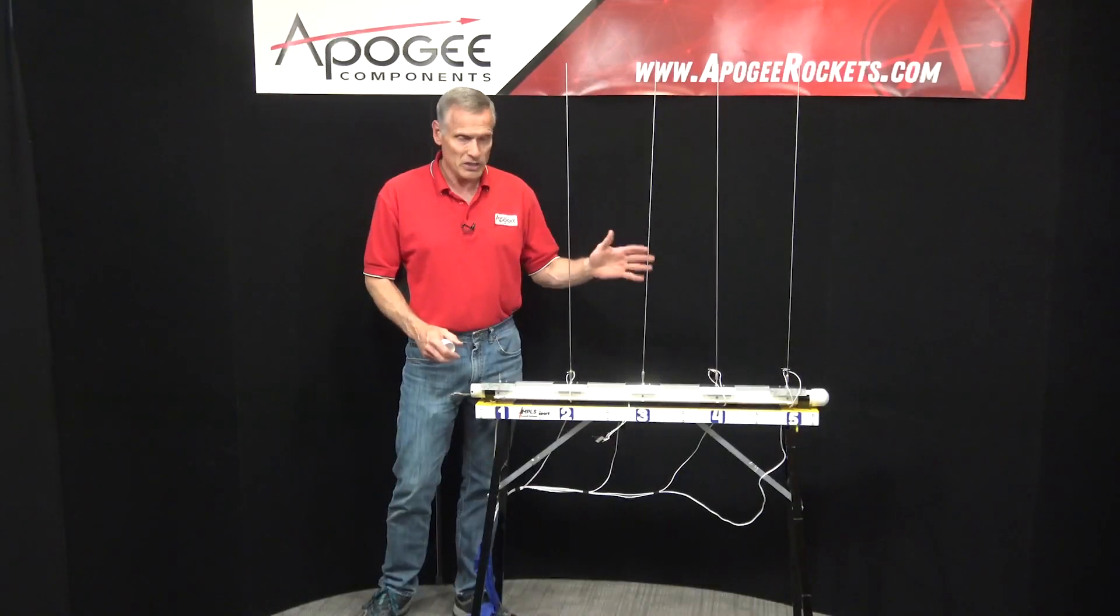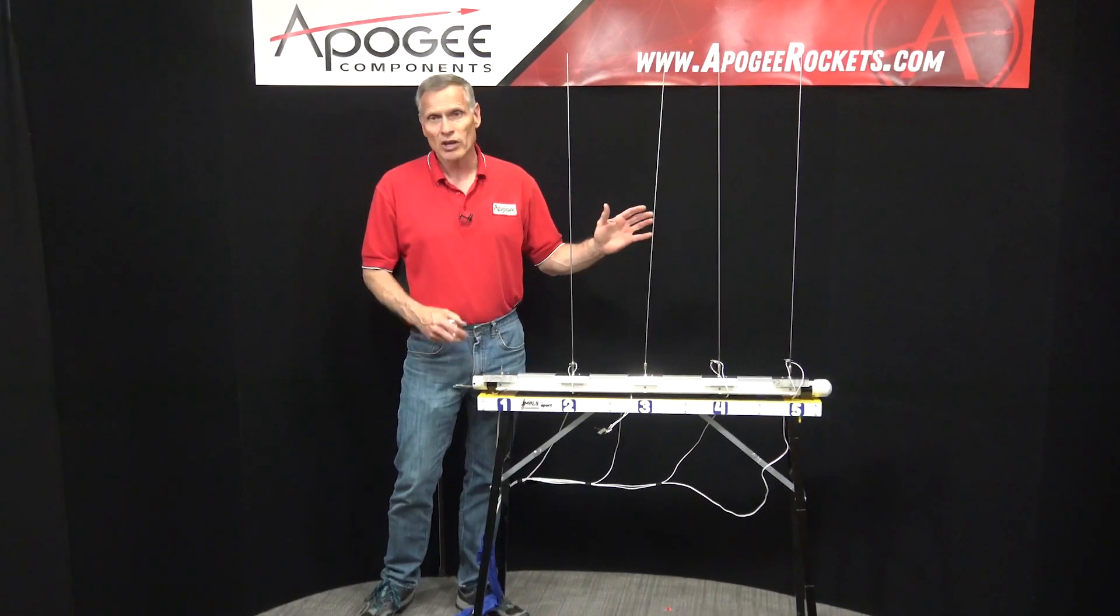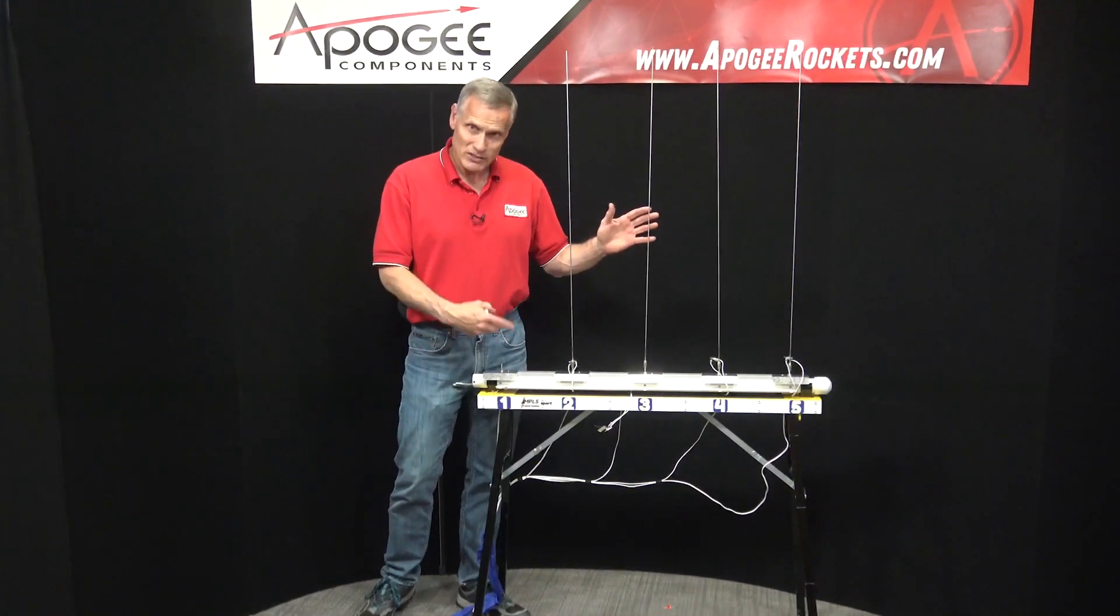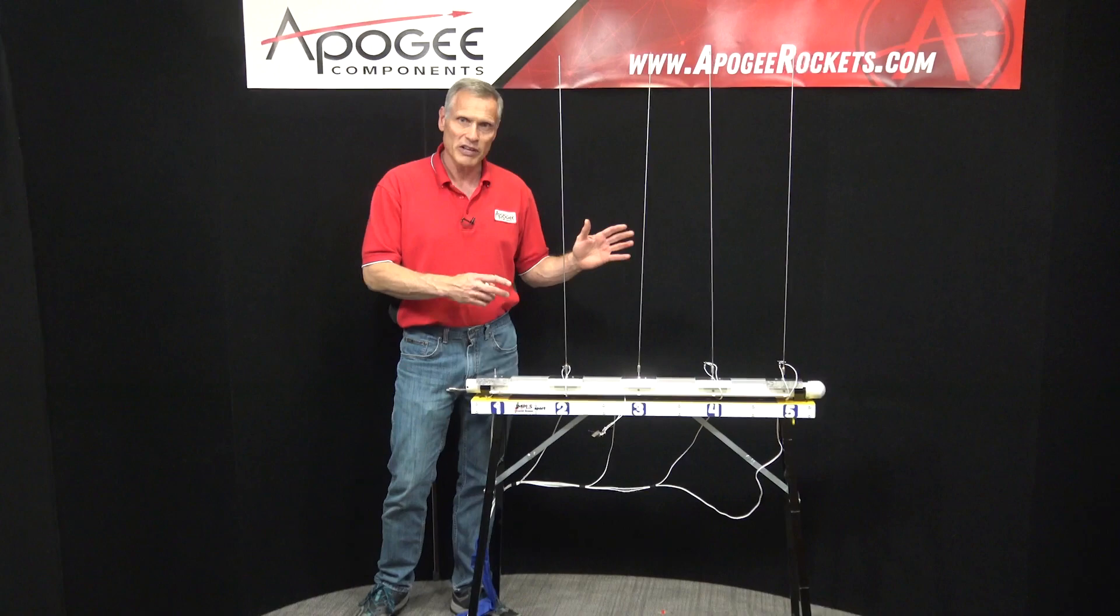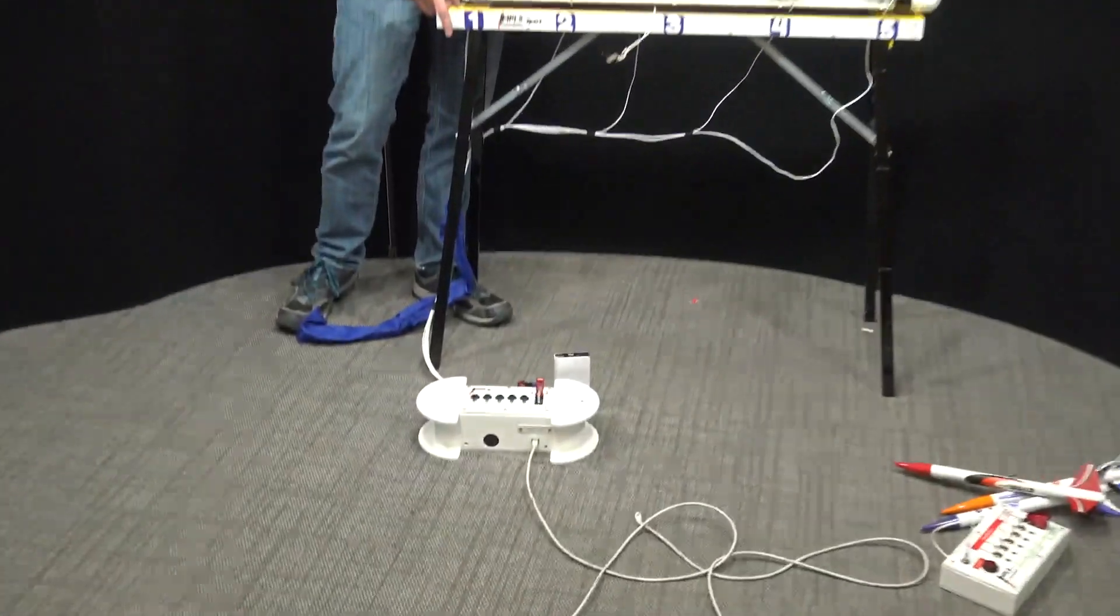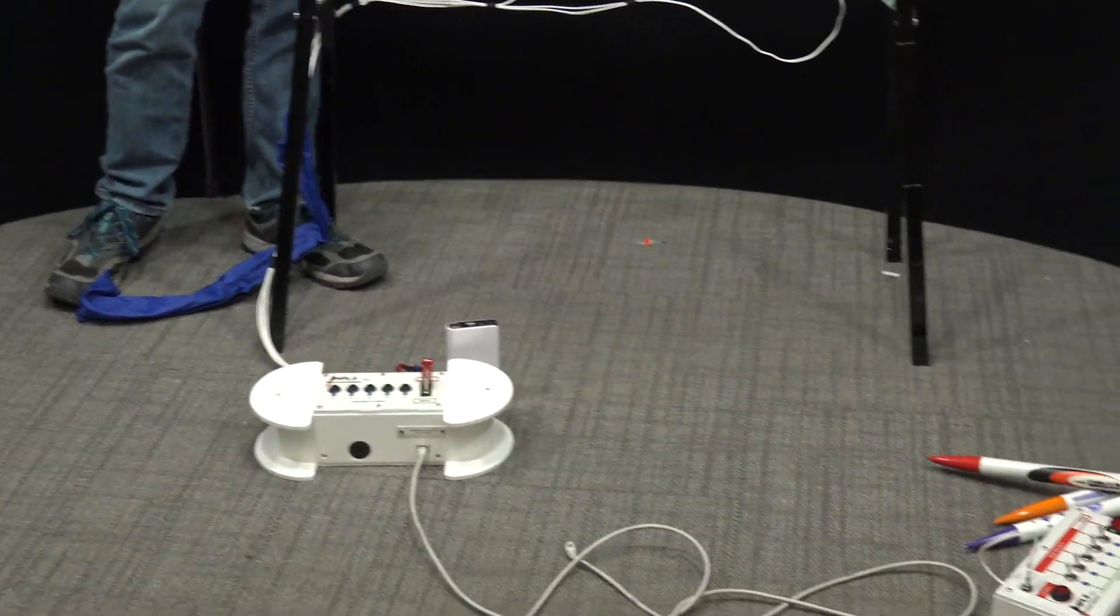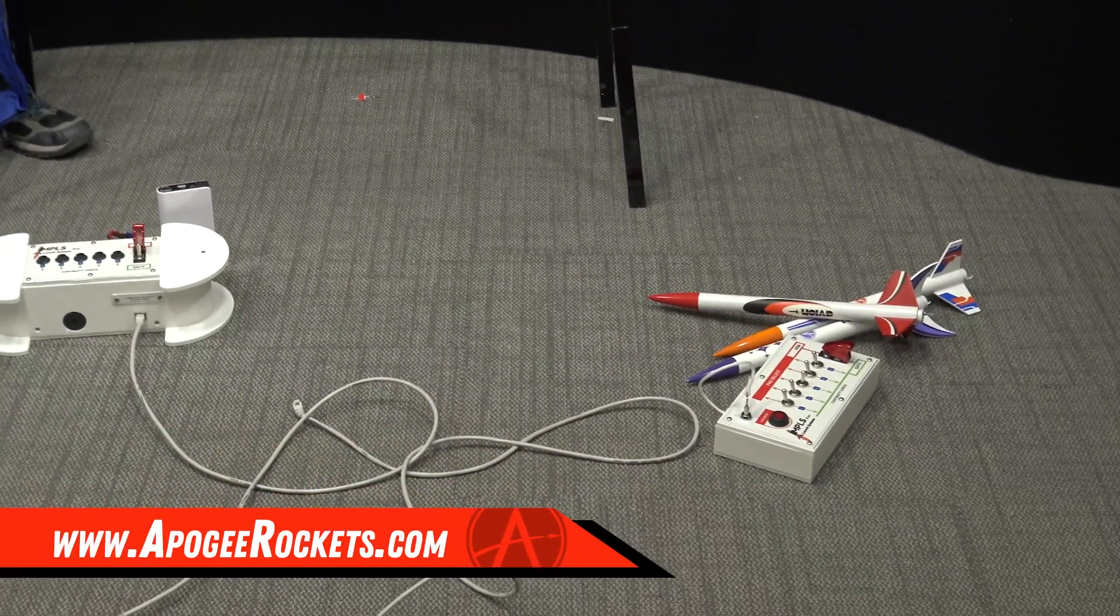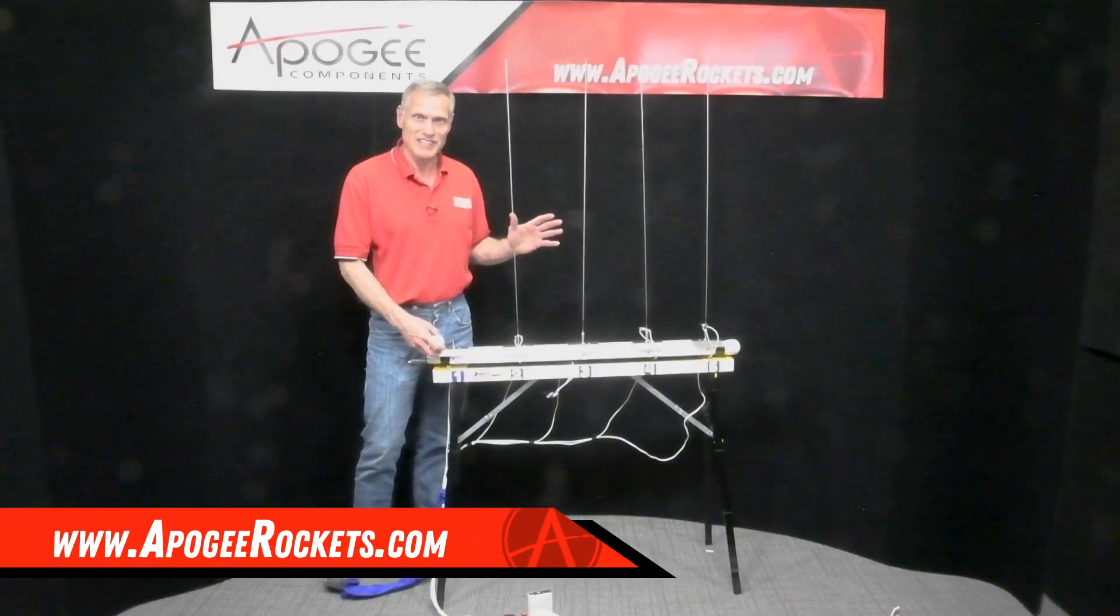So this is the Impulse Sport fiber pad system. It's a bundle. It contains four components, the launch pad, the wired controller, the battery, and the launch controller. And you can find it here at ApogeeRockets.com.